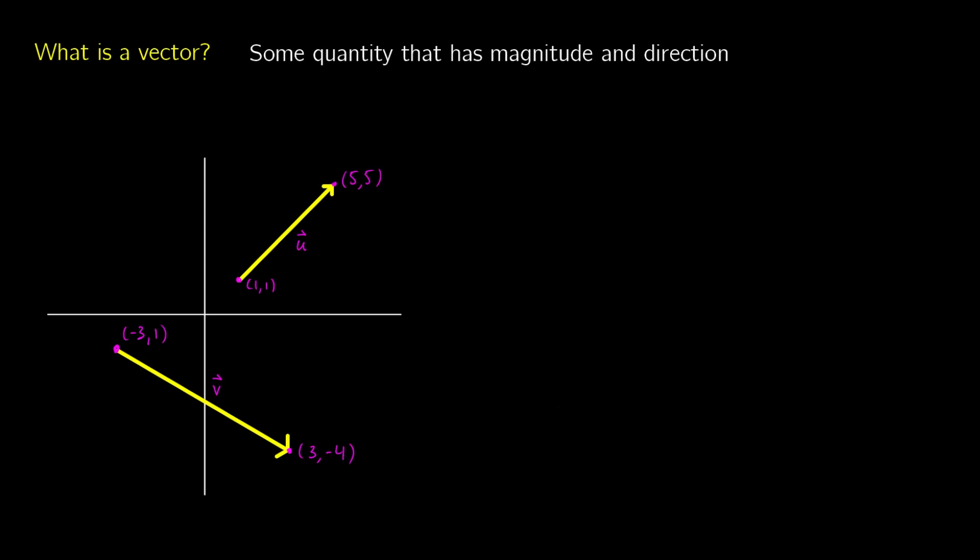A vector is anything that has a magnitude and a direction. We have two examples of vectors here on the screen. We have one vector which we call u, and we put the little vector symbol above it. You may also see it with a line underneath, especially in linear algebra in a mathematics textbook.